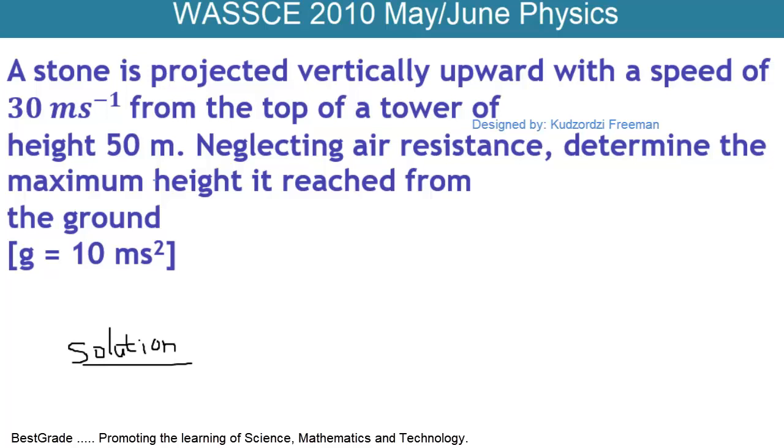WASSCE June 2010 Physics Paper 2 Question 1. A stone is projected vertically upward with a speed of 30 meters per second from the top of a tower of height 50 meters.